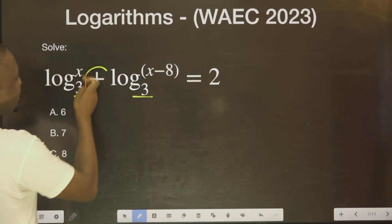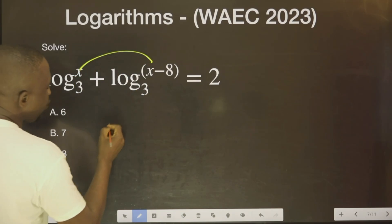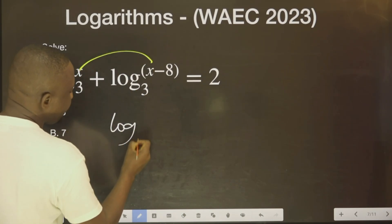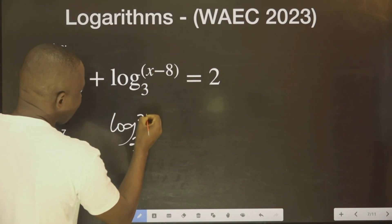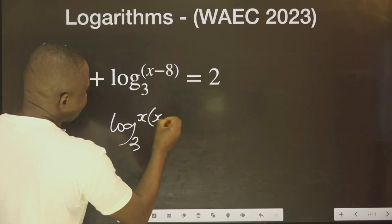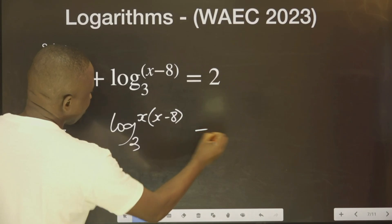This and this are the same, and this is plus. It means we can multiply this. We just take one of them, log to the base of 3, then we multiply this. x multiplied by x minus 8 equal to 2.